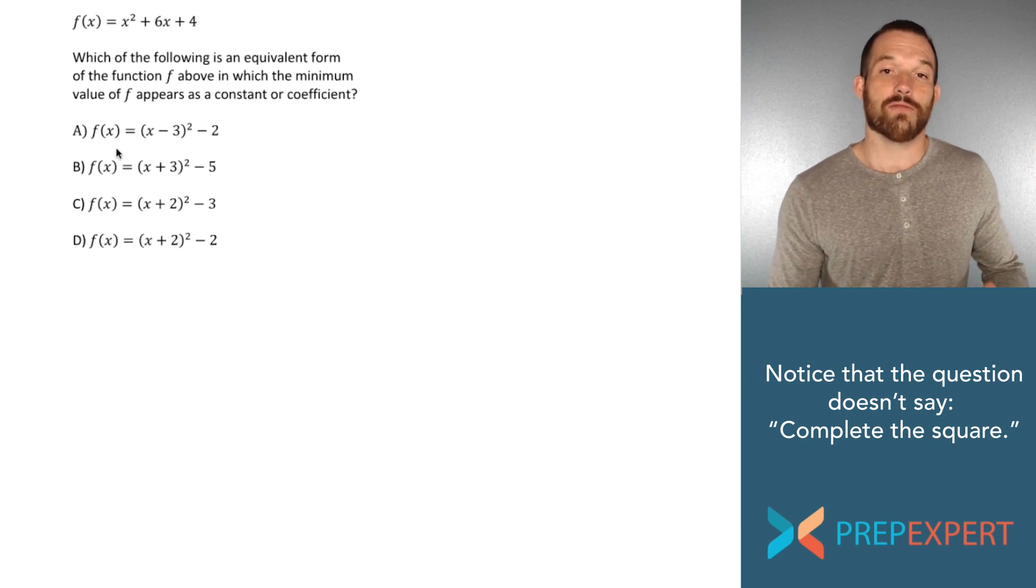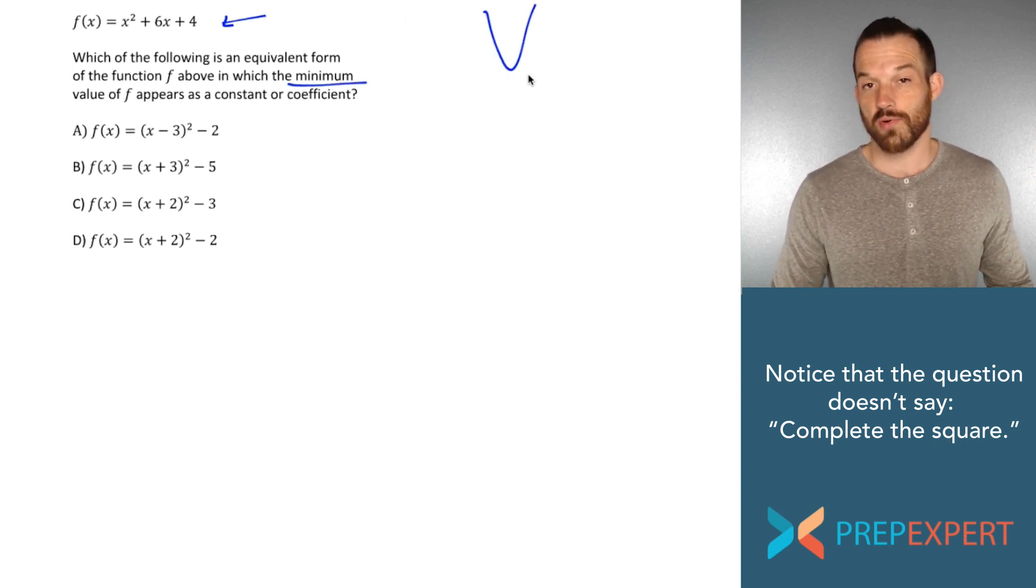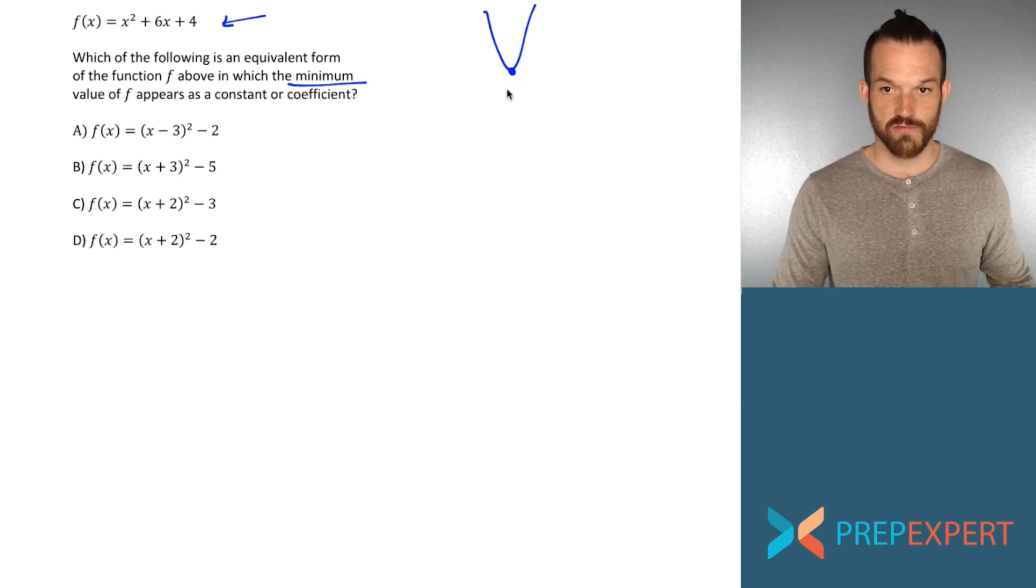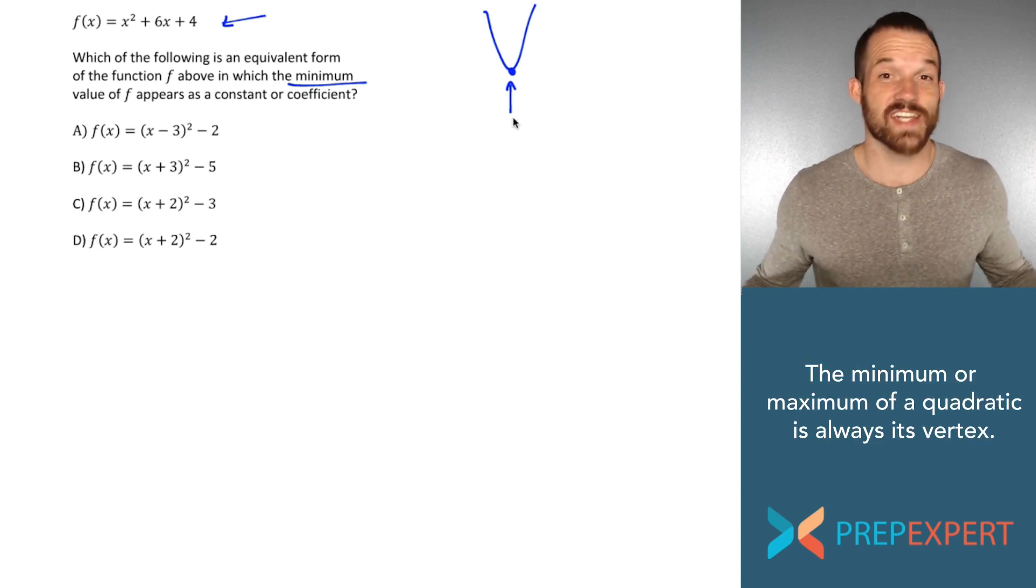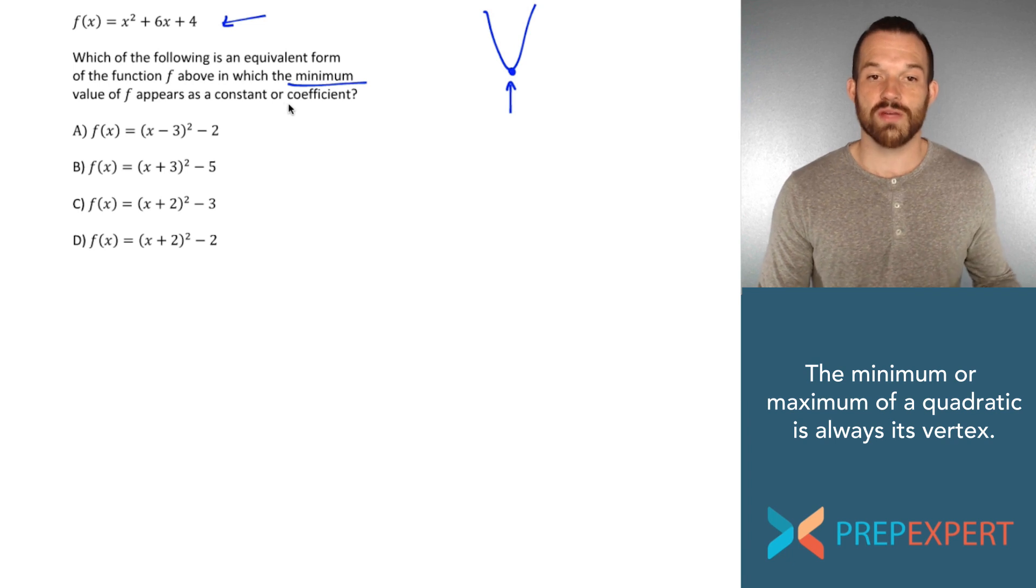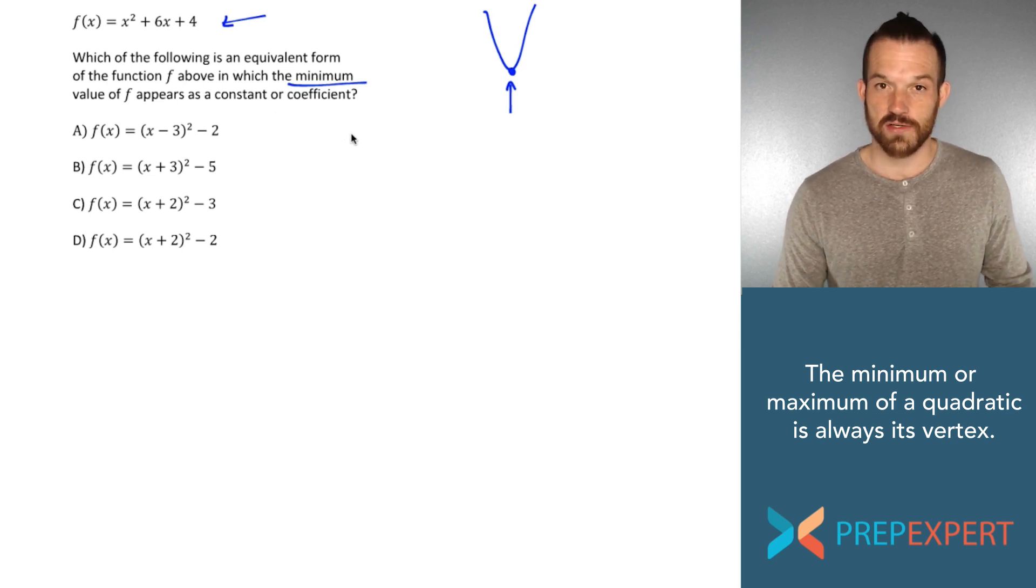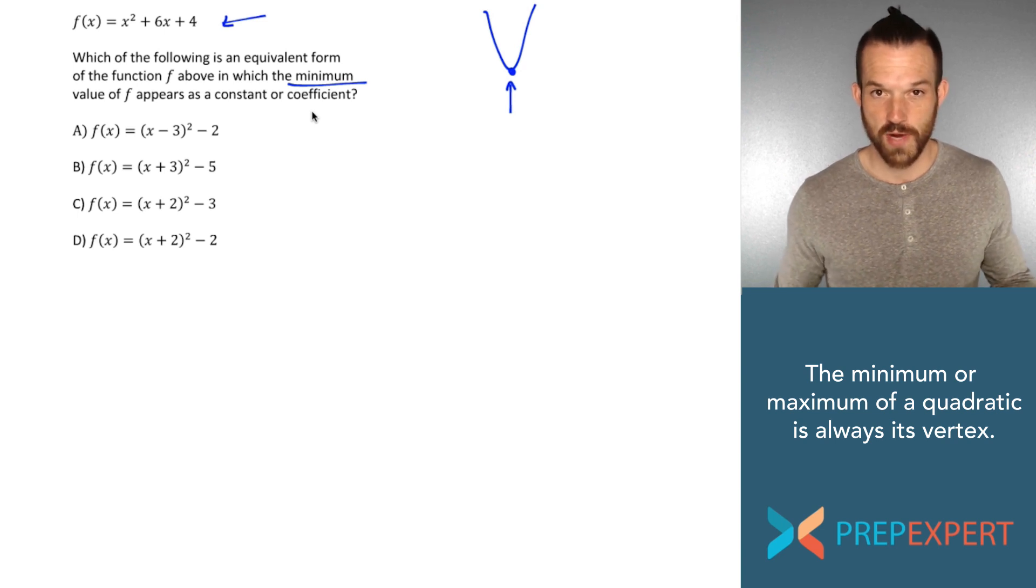Well our function is a quadratic function, and when we graph quadratic functions, the shape that the graph will have is a parabola. So the minimum value of a parabola means that the parabola opens upward and its minimum value will always be its vertex. In other words, kind of translating what this question is asking us into English, when they say which of the following is an equivalent form of the function in which the minimum value of f appears as a constant or coefficient, basically what they're saying is, take this equation we gave you and put it in the vertex form of a quadratic equation.